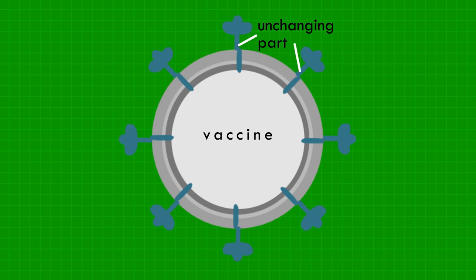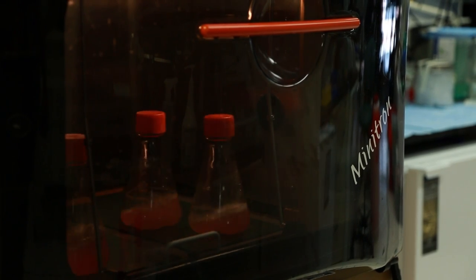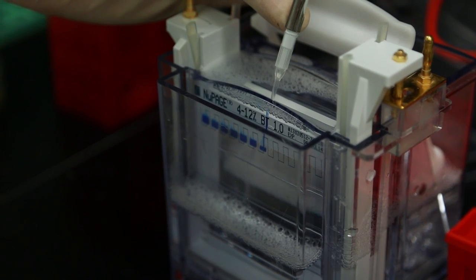The spikes are made of a flu virus protein and expose the unchanging part of the virus to the immune system. In our experimental setting, we see 10 times more antibody response compared to the traditional vaccine.